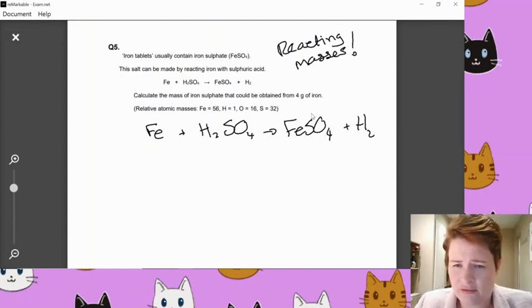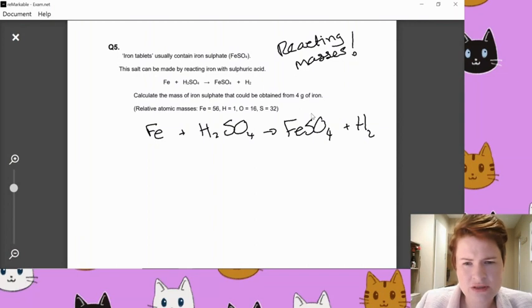So I'm just going to re-sketch out the equation nice and quickly there. FeSO4 plus H2. One iron on the left-hand side, one iron on the right-hand side. Two hydrogens on the left, two hydrogens on the right. That's fine. One sulfur on the left, one sulfur on the right. That's fine. Four oxygens, four oxygens. Great. Already balanced, sorted. I don't have to do any balancing there. That's great. That saves me a bit of fuss.